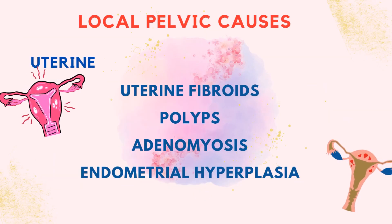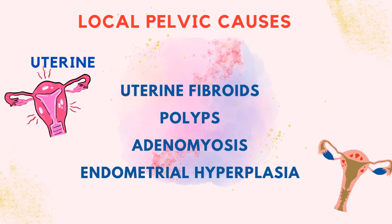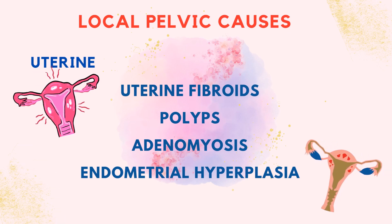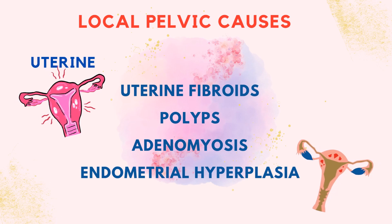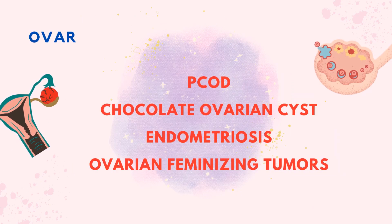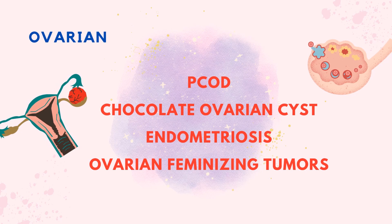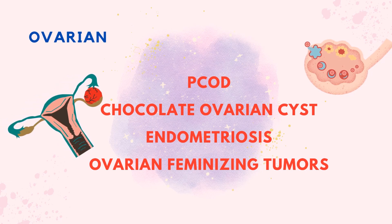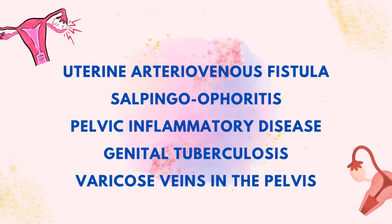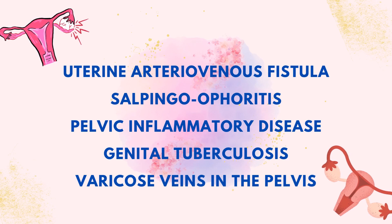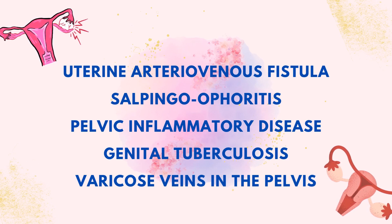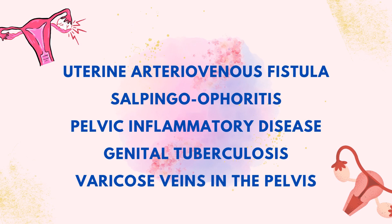Next are localized pelvic pathologies. Uterine causes include uterine fibroids, polyp, adenomyosis, and endometrial hyperplasia. Ovarian causes include PCOD (polycystic ovarian disease), chocolate ovarian cyst, endometriosis, and ovarian feminizing tumors. Other causes include uterine arteriovenous fistula, salpingo-oophoritis, pelvic inflammatory disease, genital tuberculosis, and varicose veins in the pelvis.